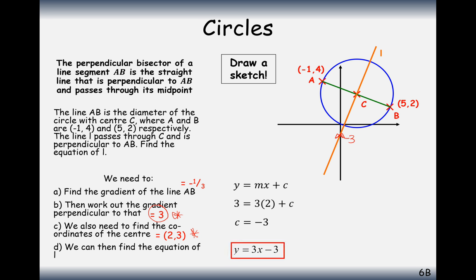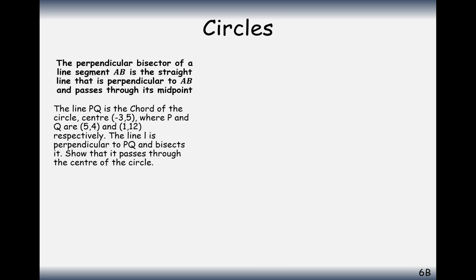That's a rough idea of how we approach these questions. Perpendicular gradients must always multiply together to make minus 1.